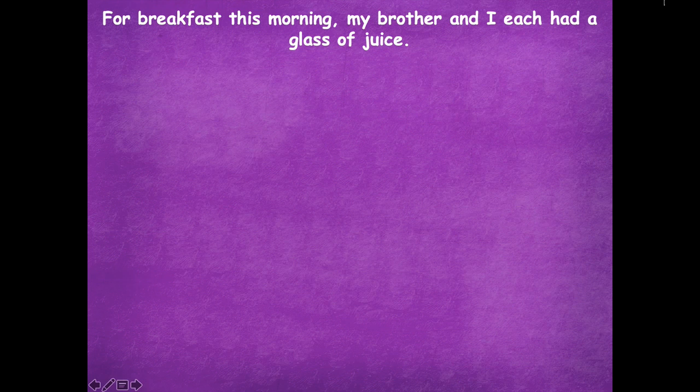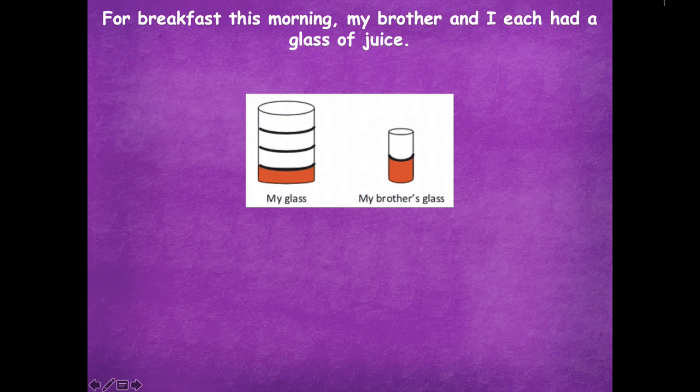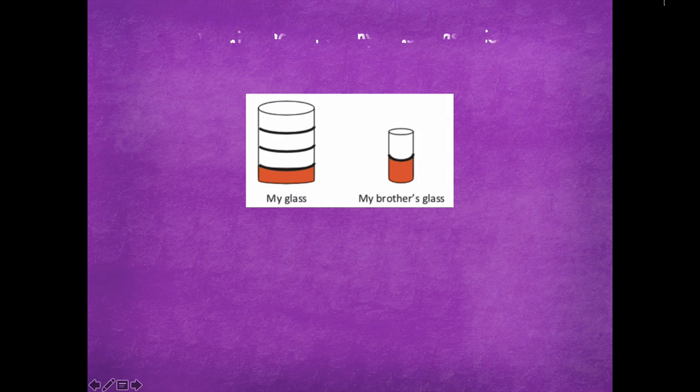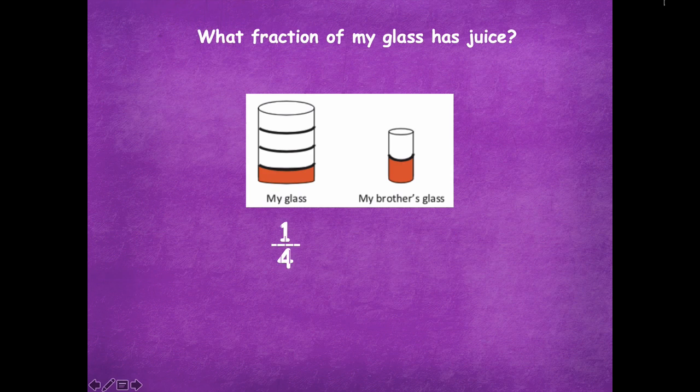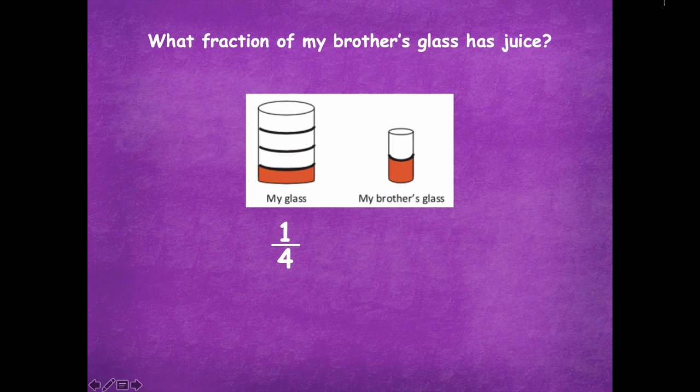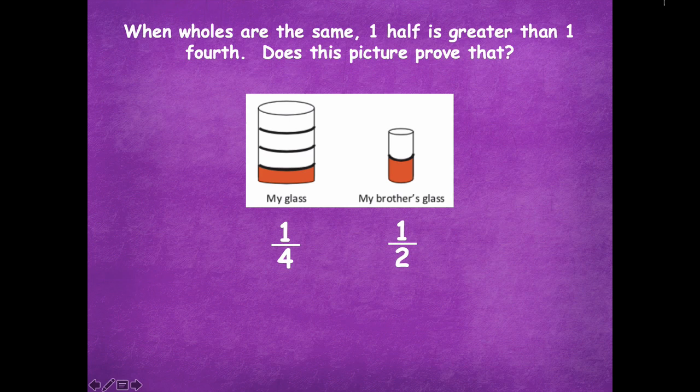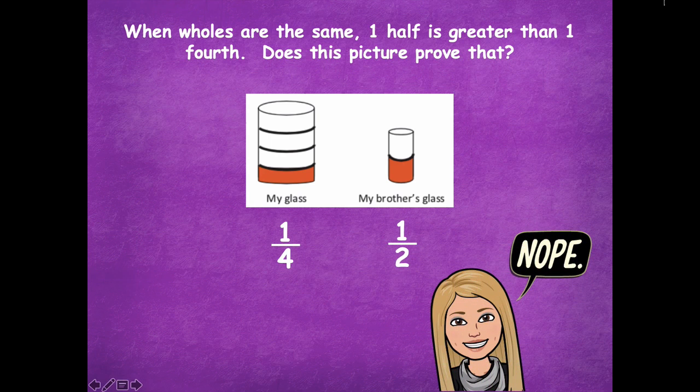So for breakfast this morning my brother and I each had a glass of juice. Okay, so here's my glass and here's my brother's glass. What fraction of my glass has juice? It's in four equal parts, one fourth. What fraction of my brother's glass has juice? Two equal parts, only one half. So when wholes are the same, one half is greater than one fourth. Does this picture prove that? Nope.